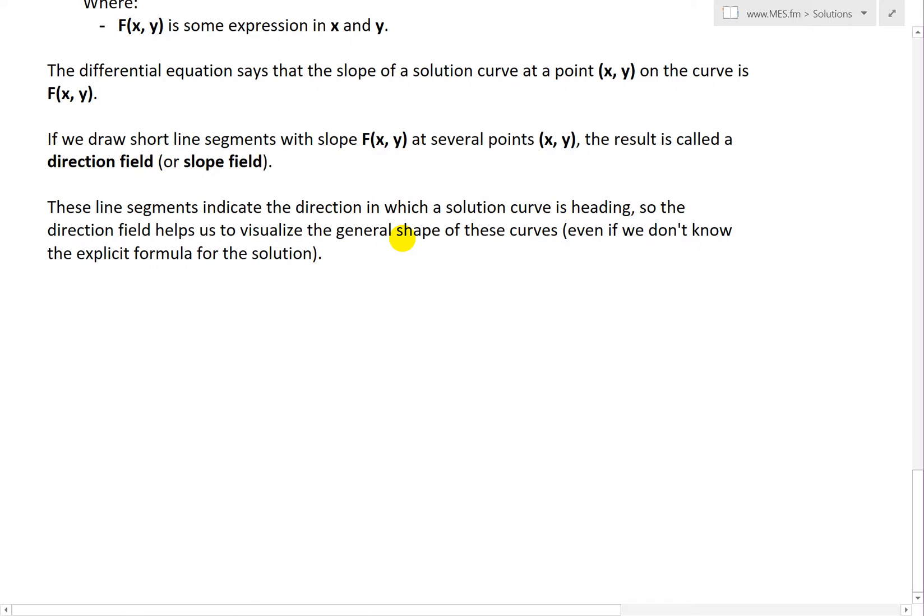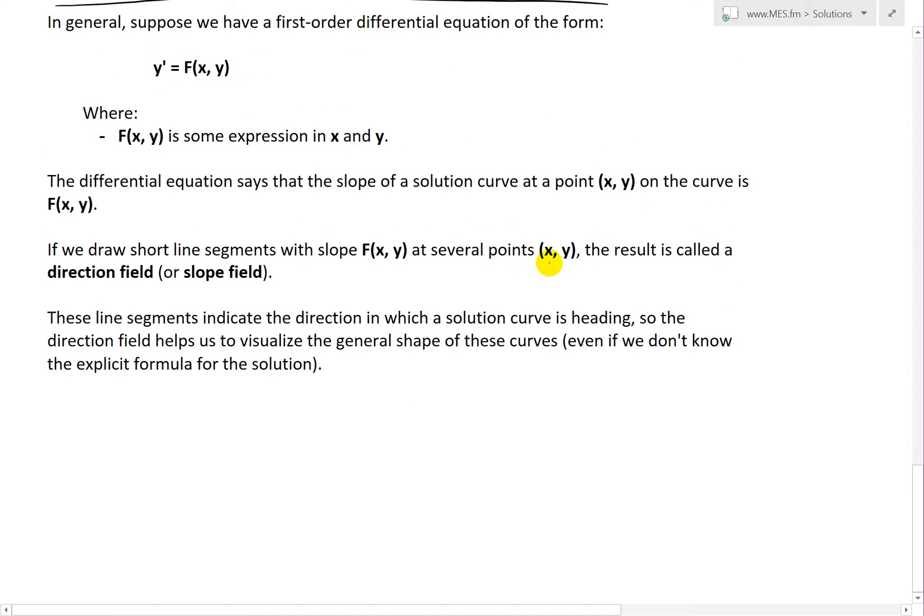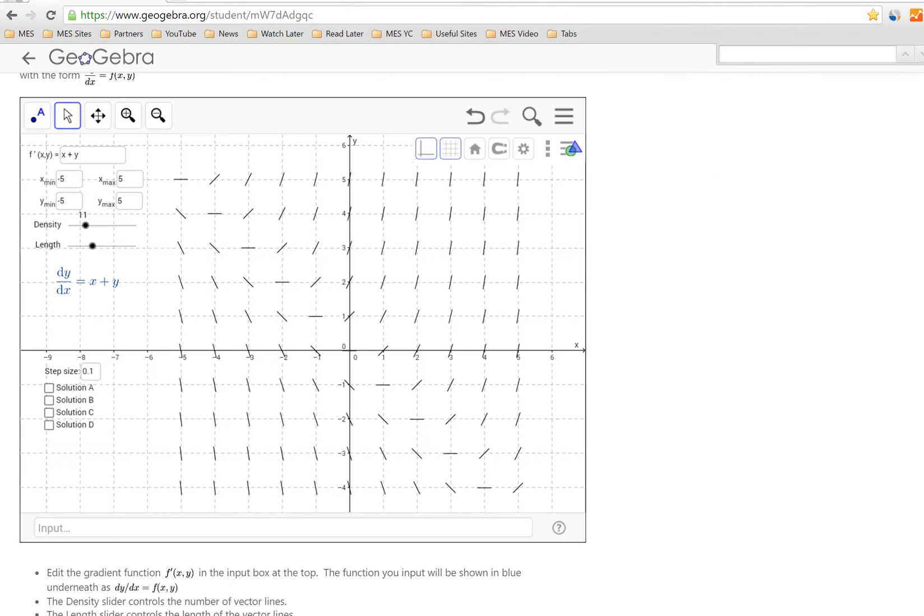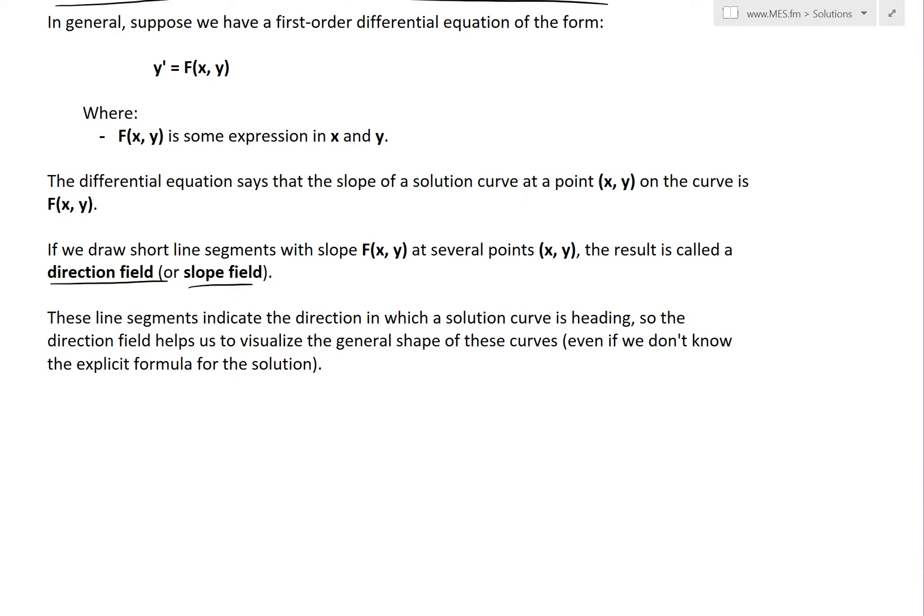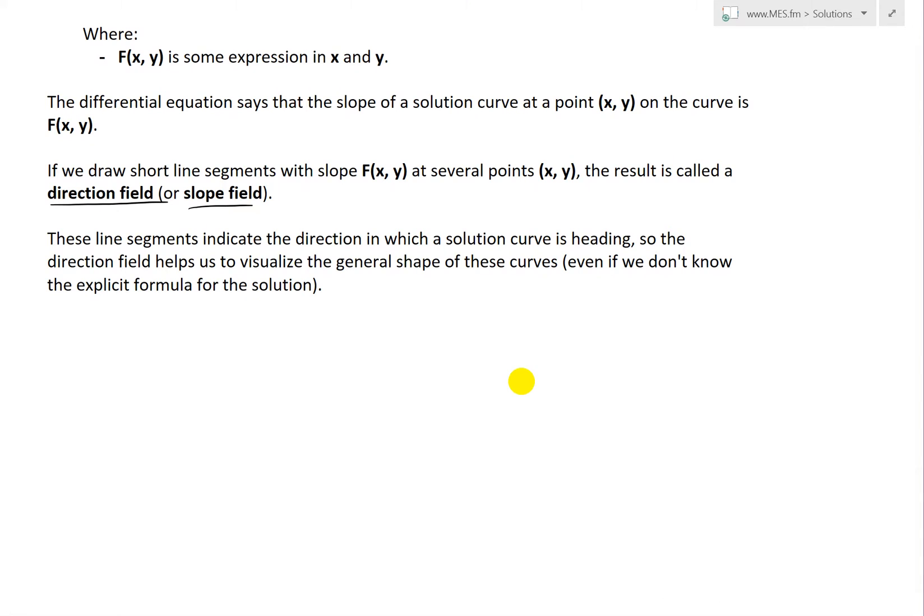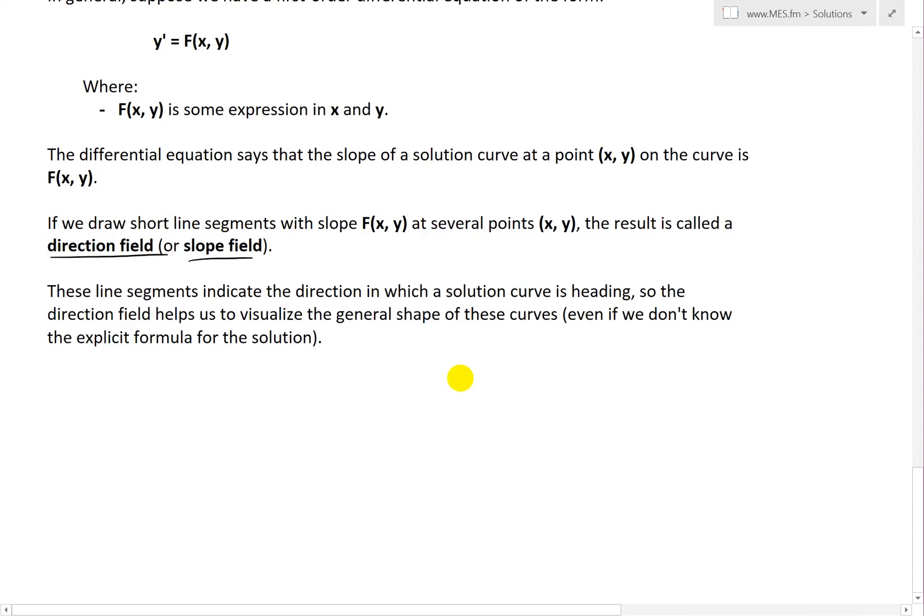So if we draw short line segments with slope F(x, y) at several points (x, y), the result is called a direction field, or it's also sometimes called a slope field. These line segments indicate the direction in which a solution curve is heading, so the direction field helps us visualize the general shape of these curves, even if we don't know the explicit formula for the solution.